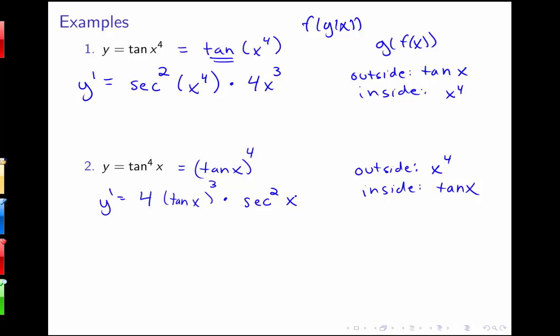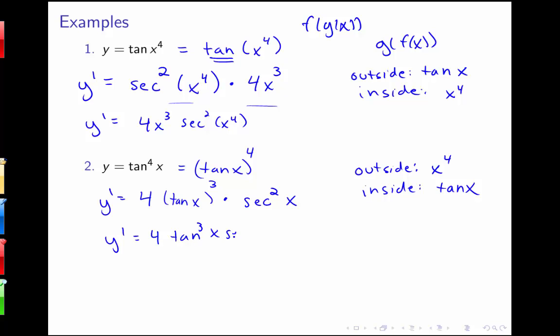Notice that with a single application of the chain rule, we always end up with a product of two terms — just as the product rule always gives a sum of two terms. If I apply the chain rule and only get a single term, I've done it incorrectly. Simplifying, the first derivative is 4x cubed secant squared of x to the fourth, whereas the second is 4 tangent cubed x secant squared x. We can see those derivatives are different, so the order of composition makes a difference.